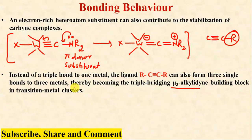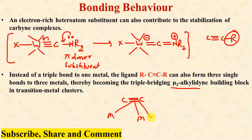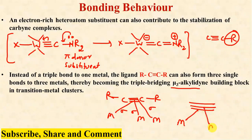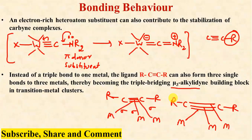Instead of forming a triple bond to one metal, these alkynes can also form three single bonds to three different metals, thereby becoming triplet bridging mu-3 alkylidyne building blocks in transition metal complexes. So the triple bond can form a new type of complex with three different metal atoms — one bond to each metal atom through sigma bonding — resulting in mu-3 alkylidyne building blocks in transition metal complexes.